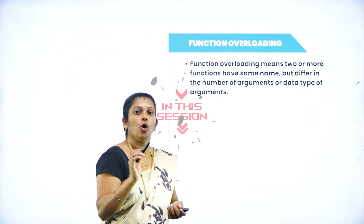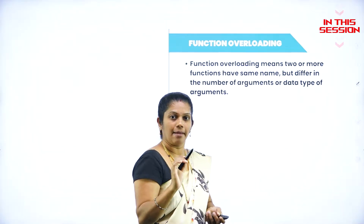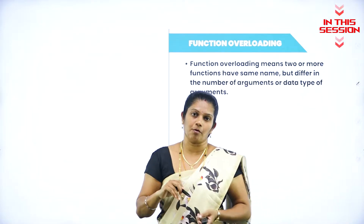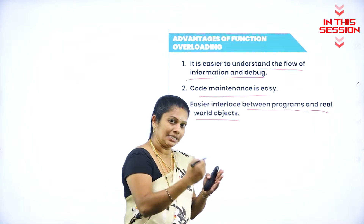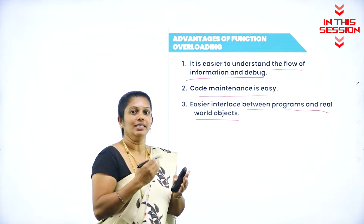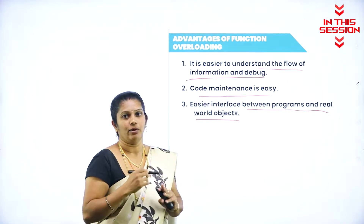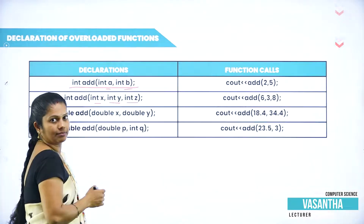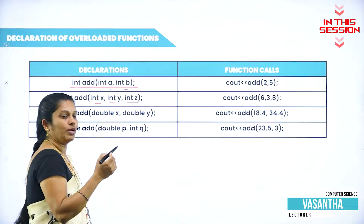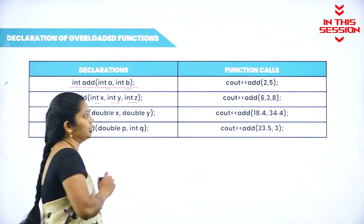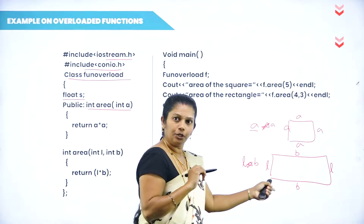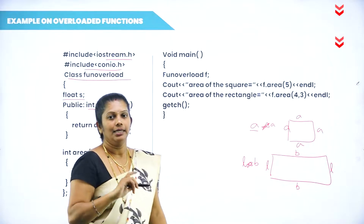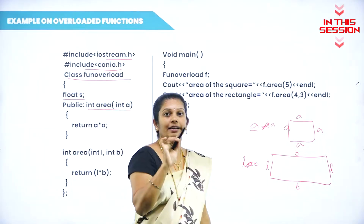Function overloading means two or more function names are the same but differ in number of arguments or data type of the argument. Debugging means after doing the testing, whatever mistakes are made, the correction of those mistakes is called debugging. For example, in a rectangle, length and breadth are different.